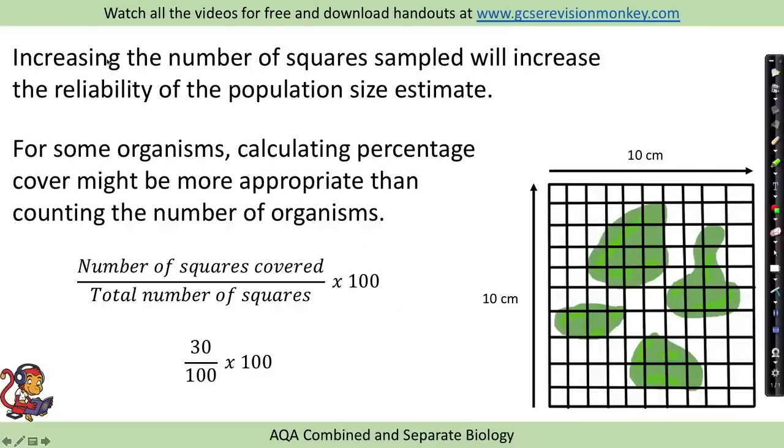A couple of key points: increasing the number of squares sampled will increase the reliability of the population size estimate. They may use the word reliability or accuracy, but the more quadrats that you put down on that field, the more reliable your estimate is going to be.